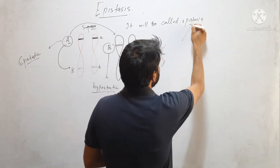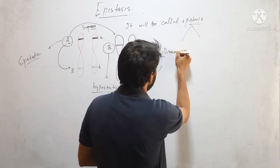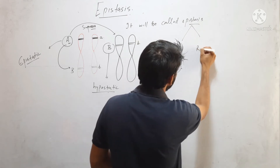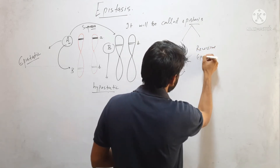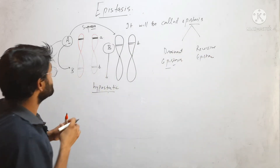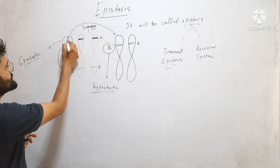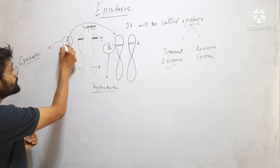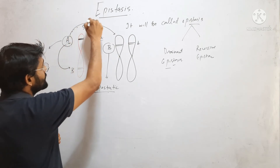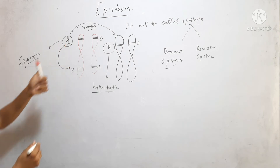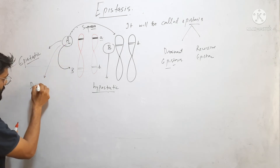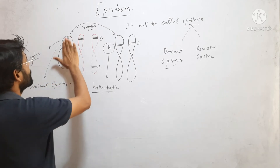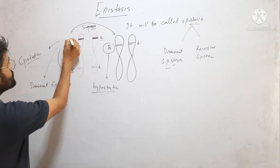Epistasis is of two types: dominant epistasis and recessive epistasis. When this gene has a dominant allele and a recessive allele, and this dominant allele expresses this gene, then it will be called dominant epistasis.